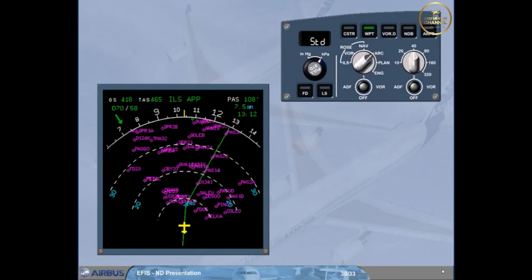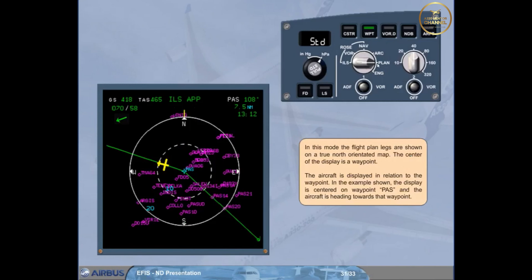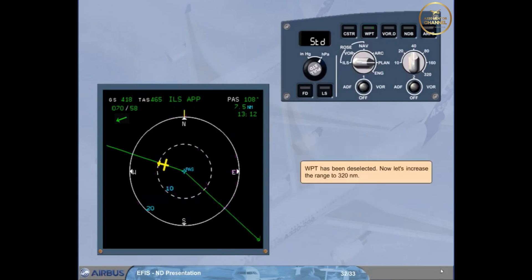Now let's look at the final display mode. Select plan mode. In this mode, the flight plan legs are shown on a true north orientated map. The center of the display is a waypoint. The aircraft is displayed in relation to the waypoint. In the example shown, the display is centered on waypoint Papa Alpha Sierra, and the aircraft is heading towards that waypoint. Now let's increase the range to 320 nautical miles.